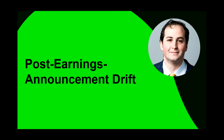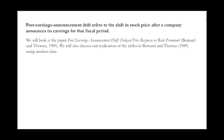In this video we're going to talk about the Post Earnings Announcement Drift from the paper Bernard and Thomas 1989. Post earnings announcement drift is how the stock price moves before and after the earnings announcement. Companies that beat earnings typically have a big positive drift, while those that miss earnings significantly typically have a big negative drift. The mechanism is prominent when big institutions focus on a stock and react to the company's earnings. In 1989, the drift could take months to develop due to informational inefficiencies.